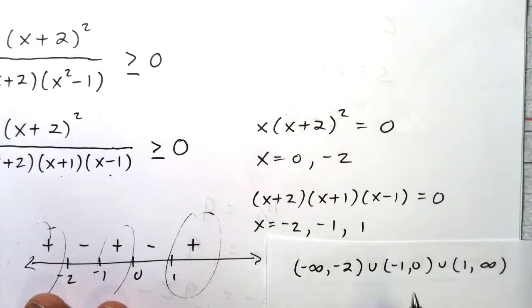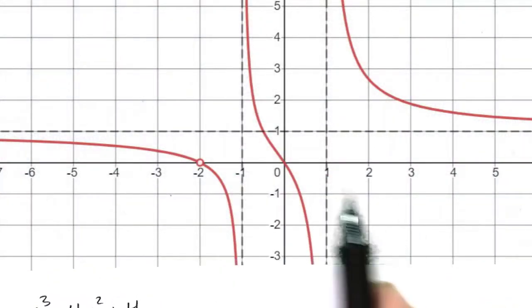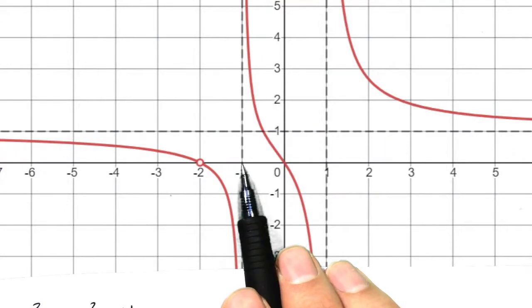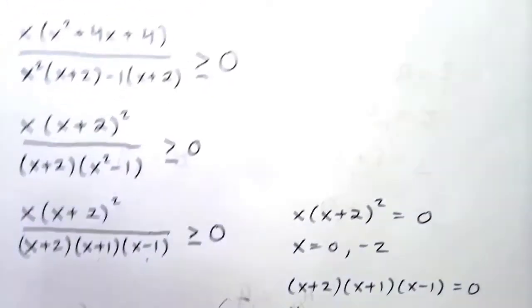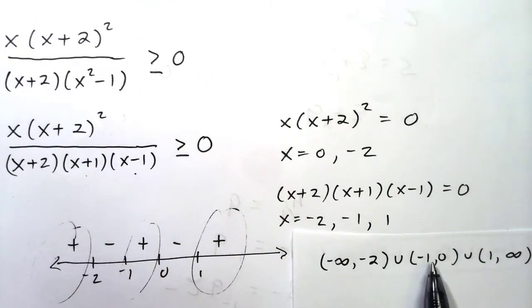Now what about near negative one? Well near negative one, we see that the function is not defined at negative one, so it doesn't make sense to say that it's greater than or equal to zero here, or to say anything about that function there. So we have to leave it open. We can't talk about its value at negative one, so we leave this open.